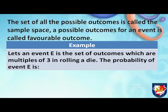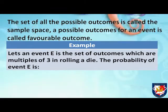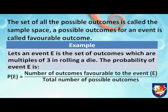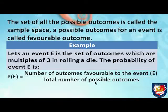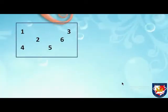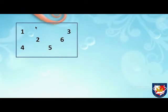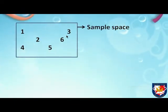For example, let event E be the set of outcomes which are multiples of three when rolling a die. The probability of event E is the number of outcomes favorable to event E divided by the total number of possible outcomes. The sample space for rolling a die is one, two, three, four, five, and six.